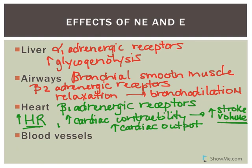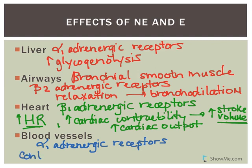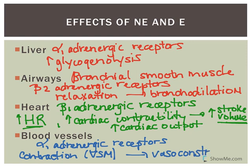The majority of blood vessels have alpha-1 adrenergic receptors. When epinephrine or norepinephrine bind to alpha-1 adrenergic receptors, it causes contraction of the vascular smooth muscle (VSM), leading to vasoconstriction. This will divert blood away from areas we don't necessarily need it at that time, to areas where it's needed. Those are some of the major effects of epinephrine and norepinephrine.